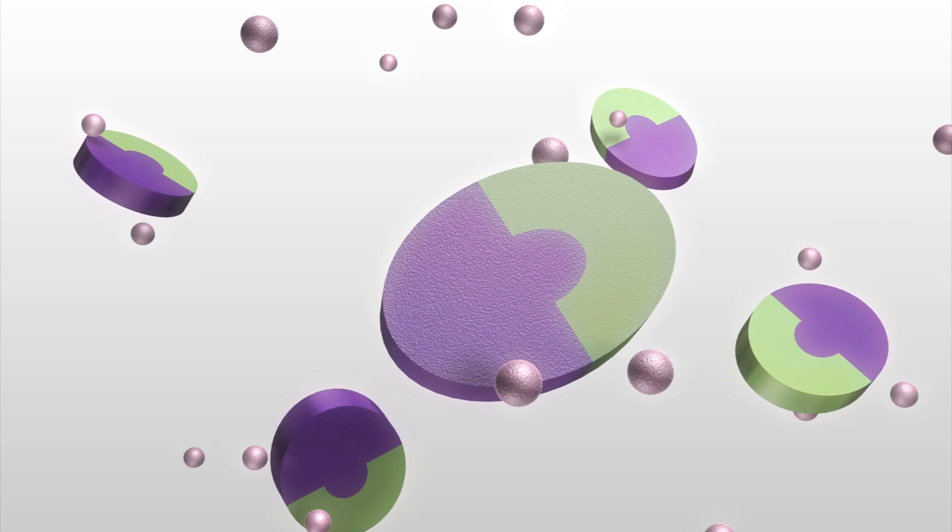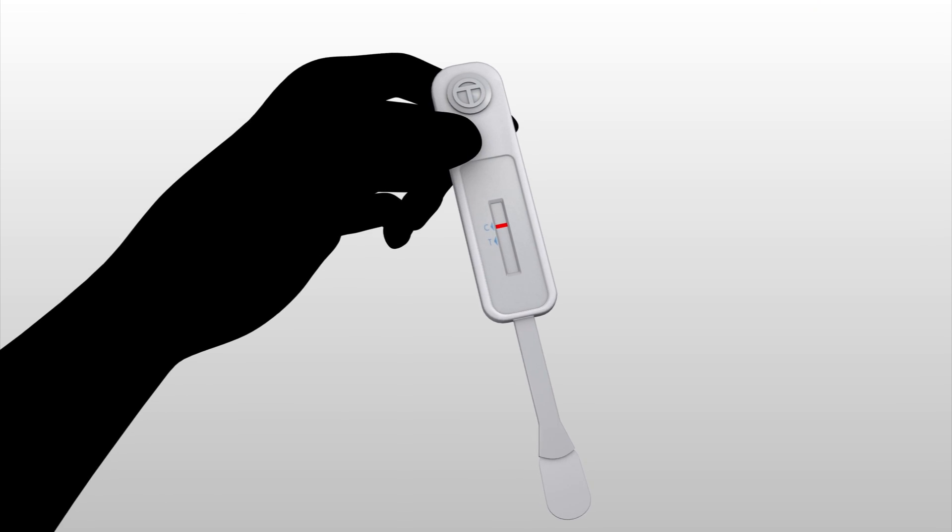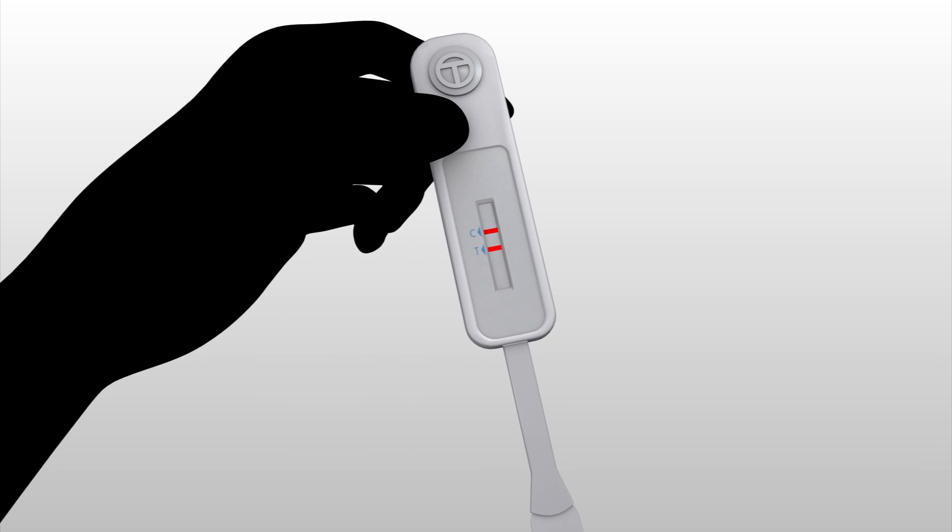The enzyme changes the color of the test paper to produce a line to indicate that the person is HIV positive.